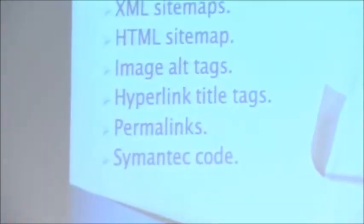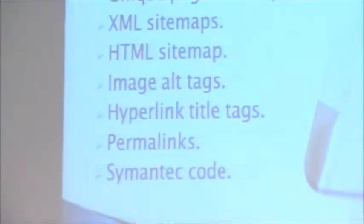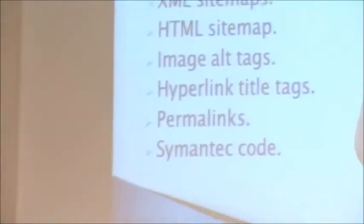Permalinks — we talked about URLs and friendly text in URLs. Sometimes you'll see URLs with question marks, ampersands, and a whole bunch of other characters. Permalink technology takes all that out and puts your keywords in the URLs. Semantic code is just formatting code — when you go to a web page, you can right-click and view source to see the code. It needs to follow a format, properly indented. Search engines need code written that way, and if it's not done properly, it can penalize you in search engines for something you have no control over.